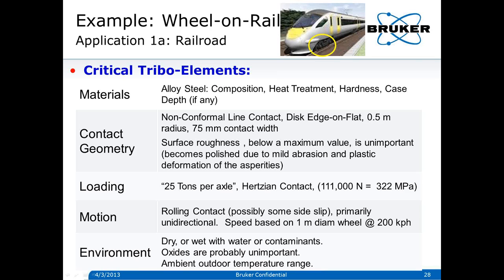For materials, alloy steel is what's used, so we need to know its composition, heat treatment, hardness, and depending on the heat treatment, whether there's a case depth. For contact geometry, what we have is a non-conformal line contact — like a large disc on its edge against a flat. The train wheel has a half-meter radius and about a 75-millimeter contact width. Surface roughness below a maximum value is probably unimportant because it becomes polished due to mild abrasion and plastic deformation of the asperities.